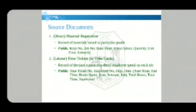The second source document is the labor time ticket or time card. This is a record of the time a particular direct employee spends on each job. The fields used are: time ticket number, employee number, department, date, start time, end time, hours spent on the job, rate of pay, amount, job number, total hours, and supervisor name.